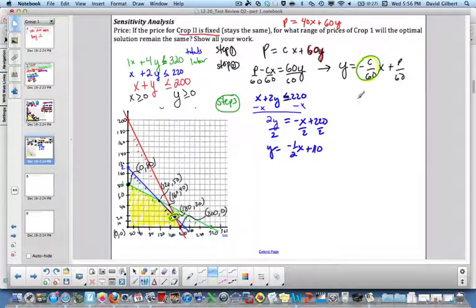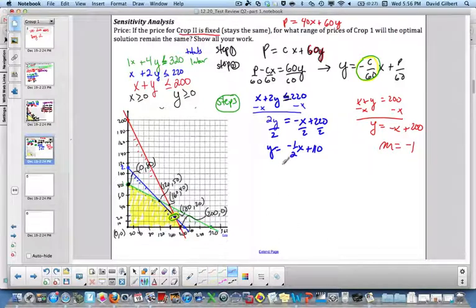Now for the other equation, that's pretty easy. You get x plus y equals 200, subtract x, and we get y equals negative x plus 200. So here our slope is negative 1, and here our slope is negative 1/2. Right, so negative 1 is less than negative 1/2.